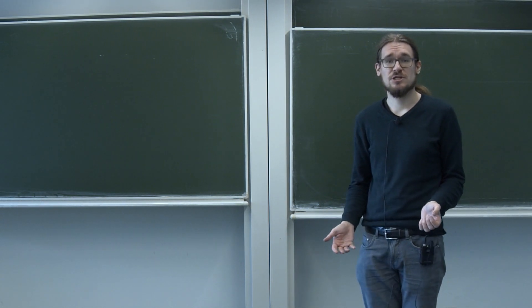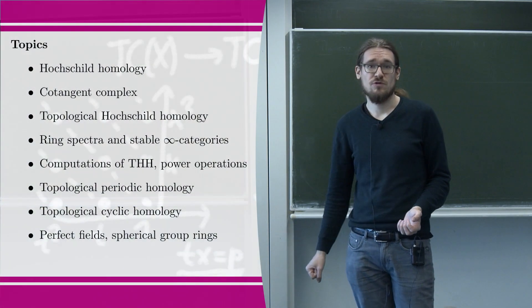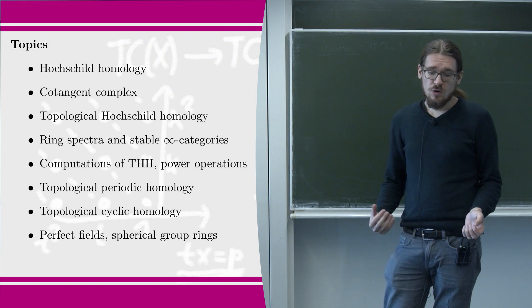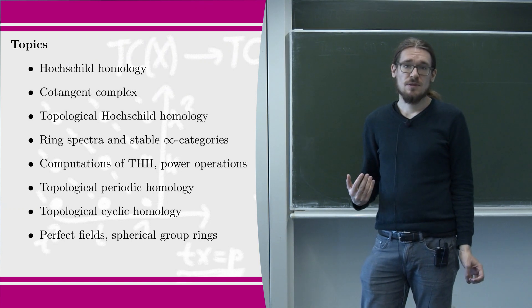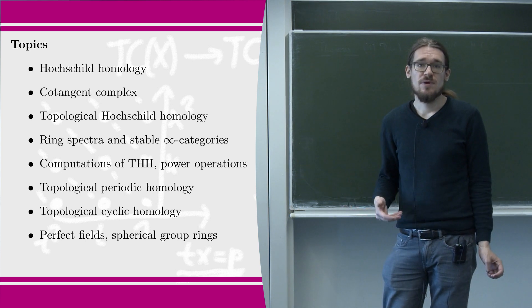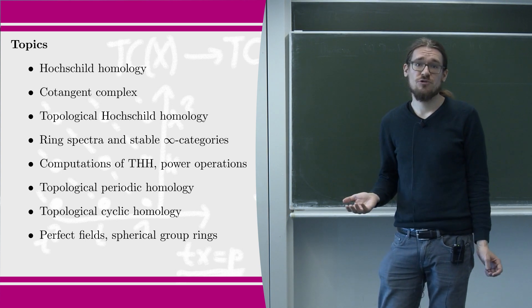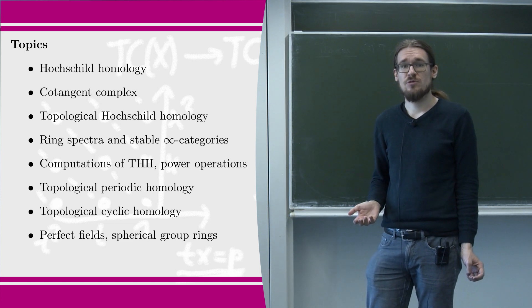This will involve learning about a number of related topics, which we'll now go over briefly. Hochschild homology in the classical sense is an invariant of associative rings, but we'll see that for commutative rings it's closely related to the algebraic de Rham complex.